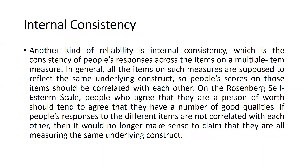The next category is internal consistency. Internal consistency means we are talking about consistency of people's responses across the items. Across the items means, let's say one construct has five items — we will check the correlation between all items. Let's say you have seven questions: question one, two, three, four, five, six, seven. You have to check all seven questions with all seven questions, both vertically and horizontally, to check correlation between all these questions.